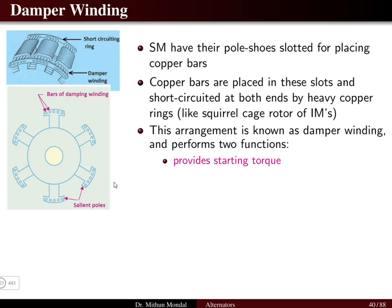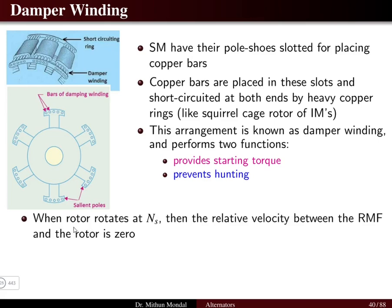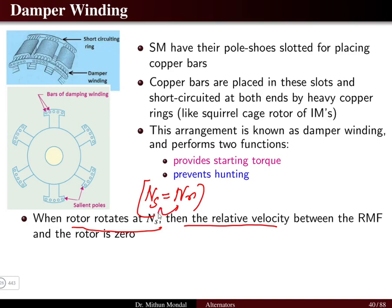Damper winding performs two basic functions: first, it provides starting torque for the synchronous machine; second, it prevents hunting. When the rotor rotates at the synchronous speed, the synchronous speed Ns of the rotating magnetic field equals the rotor speed Nr. The relative velocity — the speed difference between the stator's rotating magnetic field and the rotor — is therefore zero.